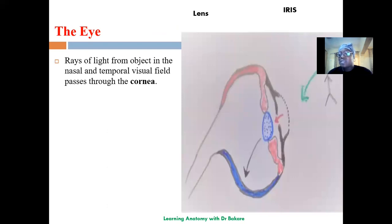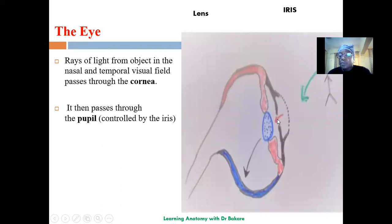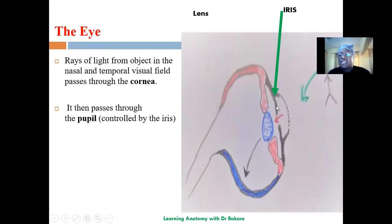We start with the eyes because the light rays that come from the object first go to the eye. This is the general configuration of the eye. This is the cornea — a transparent structure that covers the pupil. This is the pupil, and the iris is the structure that controls pupillary dilation. The pupil is the round black region.